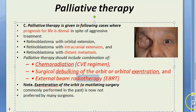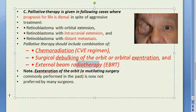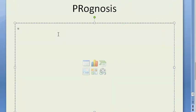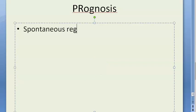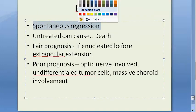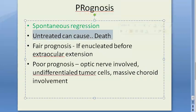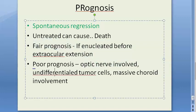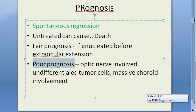Regarding prognosis: if untreated, the patient dies. Spontaneous regression can occasionally occur. If enucleation is done before extraocular extension, there is fair prognosis. Poor prognosis occurs when the optic nerve is involved, tumor cells are undifferentiated, or there is massive choroid involvement.